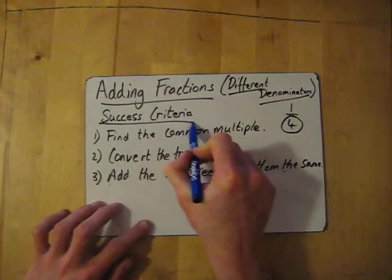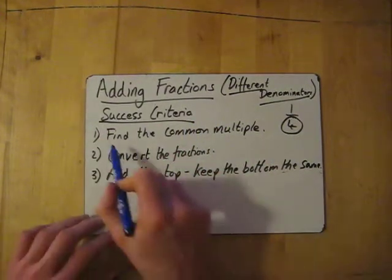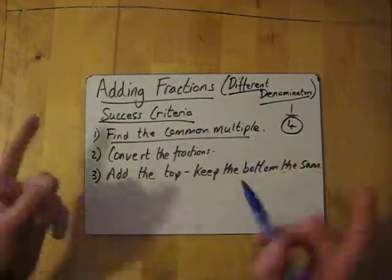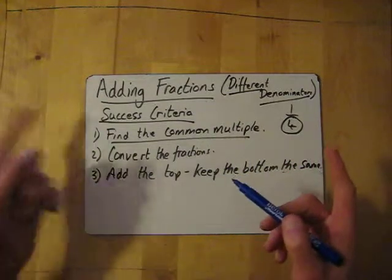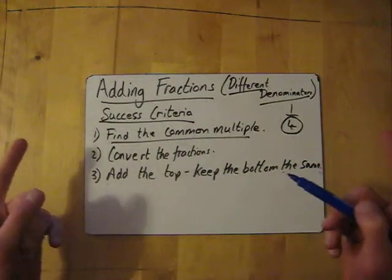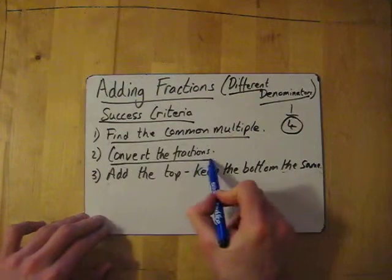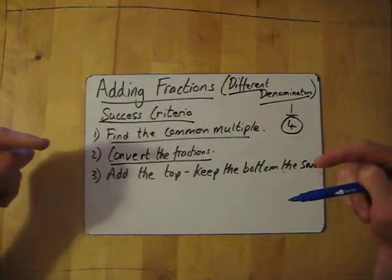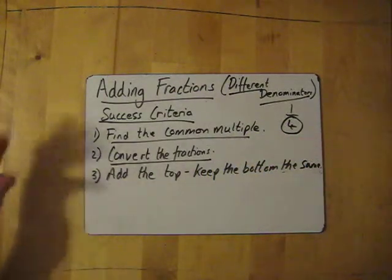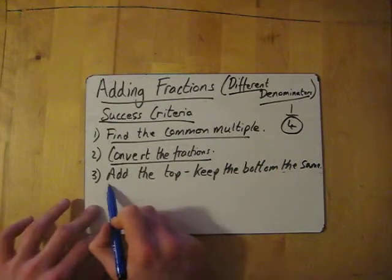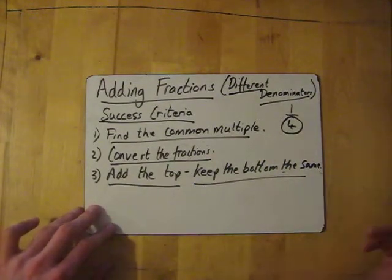So success criteria. First of all, you need to find the common multiple between the two fractions. What times table is that number in, that that number is in as well. Then you need to convert the fractions so that the denominators are the same. And then after you've done that, it becomes that easy. All you do is add the top and keep the bottom the same.